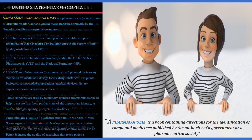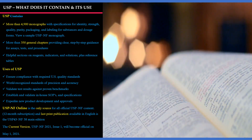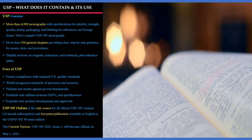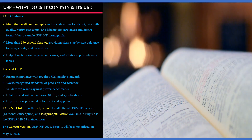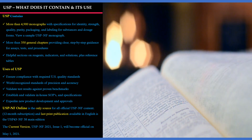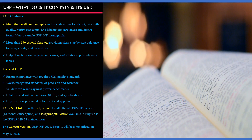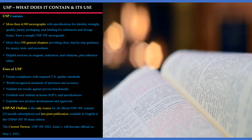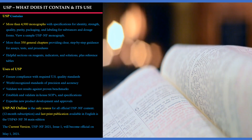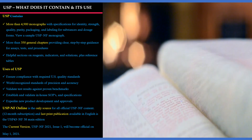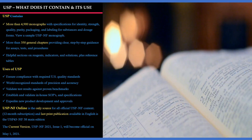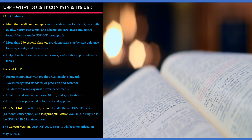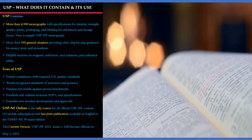USP contains more than 4900 monographs with specifications for identity, strength, quality, purity, packing and labeling for substances and dosage forms. It also contains more than 350 general chapters providing clear step-by-step guidance for assay tests and procedures. It includes sections on reagents, indicators and solutions, plus reference tables.